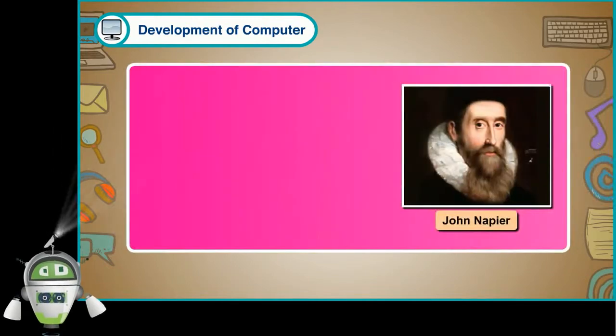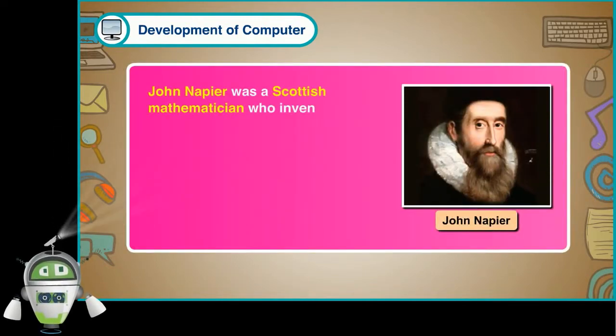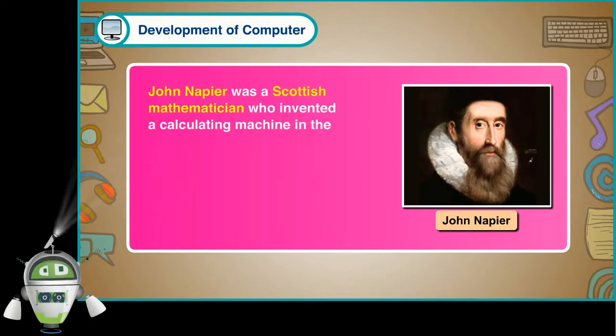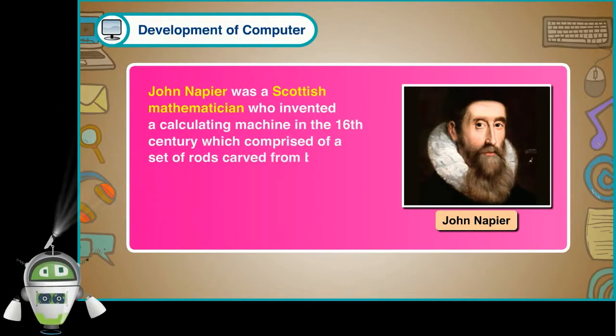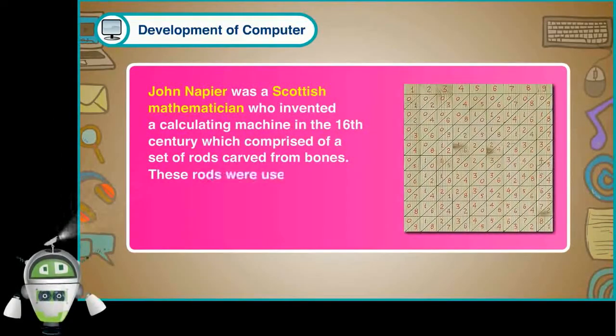John Napier. John Napier was a Scottish mathematician who invented a calculating machine in the 16th century which comprised of a set of rods carved from bones. These rods were used to do multiplication. This machine was known as Napier's bone.